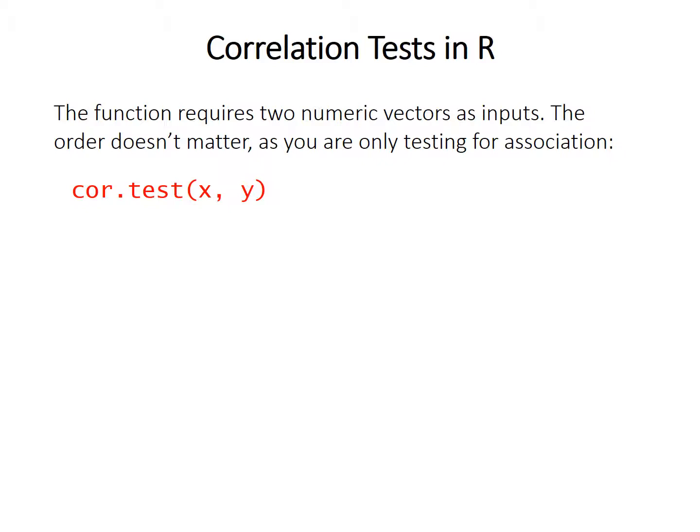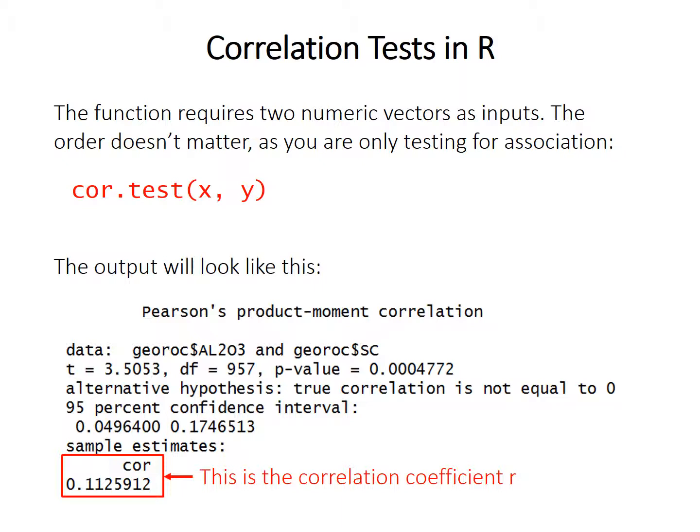The R function for correlation is called cor.test, and it requires two numeric vectors as inputs (x and y). They must be the same length, but the order doesn't matter since you're testing for association — cor.test(x, y) and cor.test(y, x) give the same correlation coefficient and p-value. The output shows the test name, the correlation coefficient r (listed as 'sample estimate cor'), and the p-value. You don't need to report the t-statistic, degrees of freedom, or the 95% confidence interval. Just report the test name, the correlation coefficient r, and the p-value.